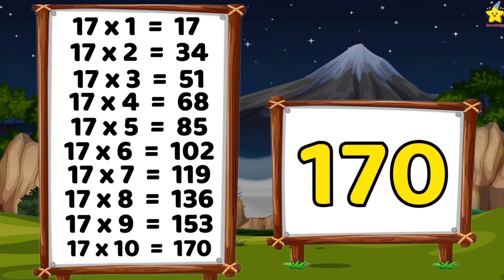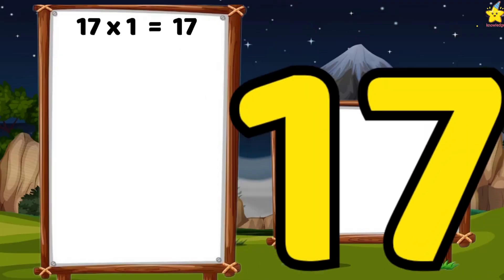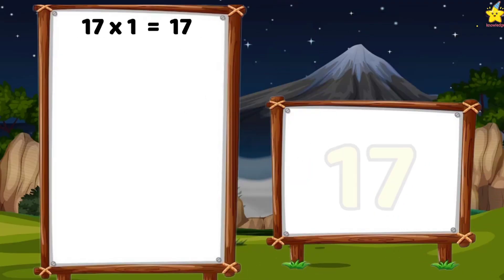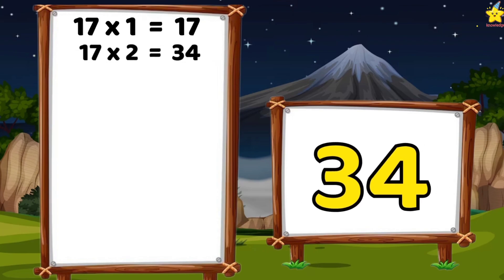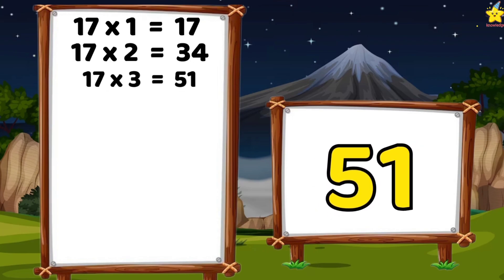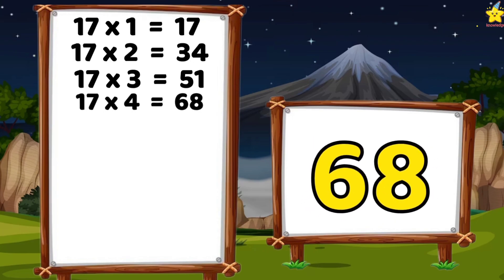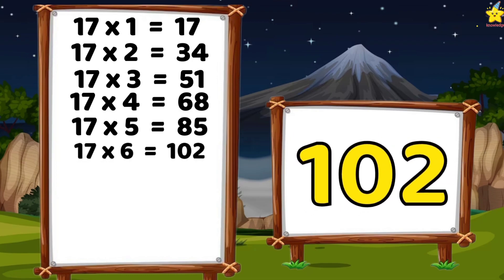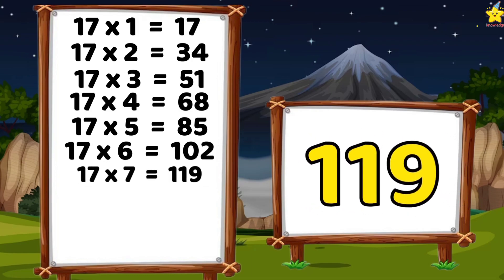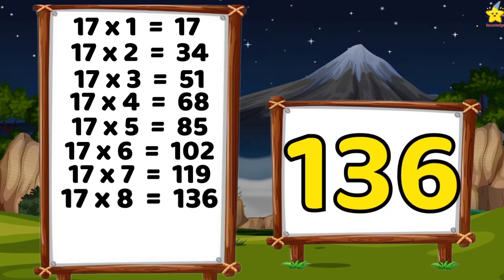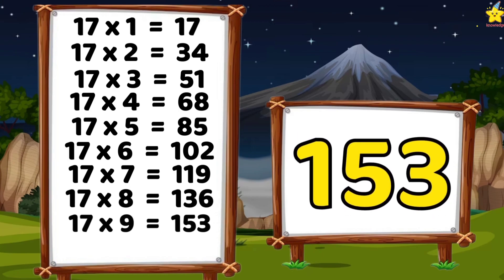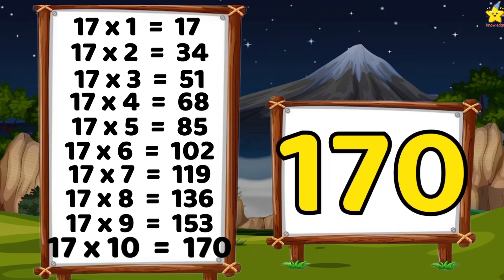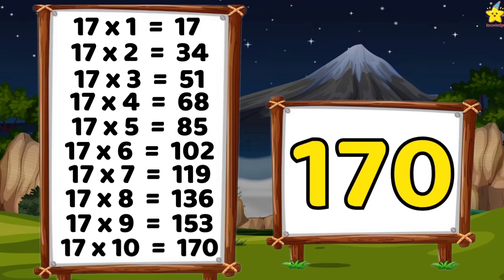Let's again. Table of 17. 17 ones are 17. 17 twos are 34. 17 threes are 51. 17 fours are 68. 17 fives are 85. 17 sixes are 102. 17 sevens are 119. 17 eights are 136. 17 nines are 153. 17 tens are 170.